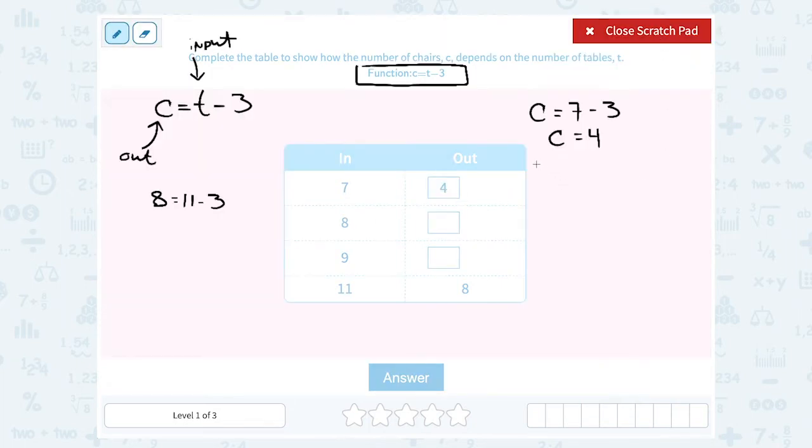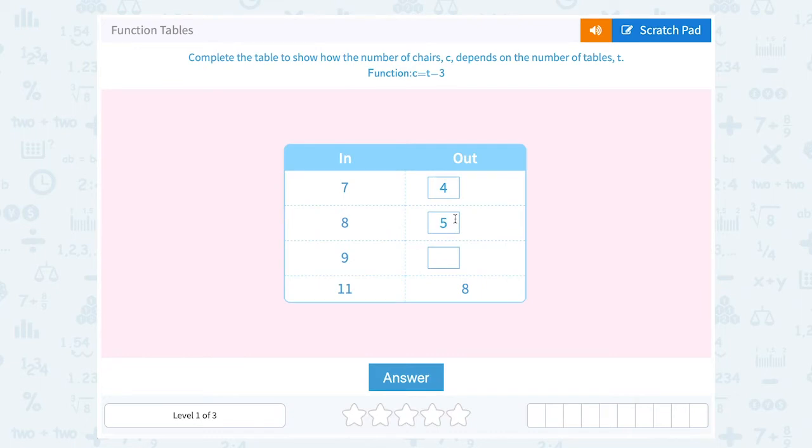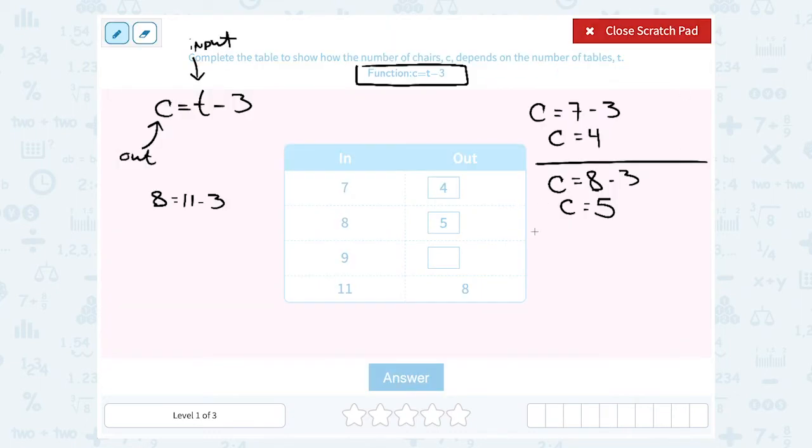And then we want to do the same thing for the other two missing numbers. What about when we put in 8? Well here, if we put 8 into our pattern, or our function, it would be 8 minus 3. C is equal to 8 minus 3, and 8 minus 3 would give us 5. So we're going to fill in our 5, and then we have one more problem to do.